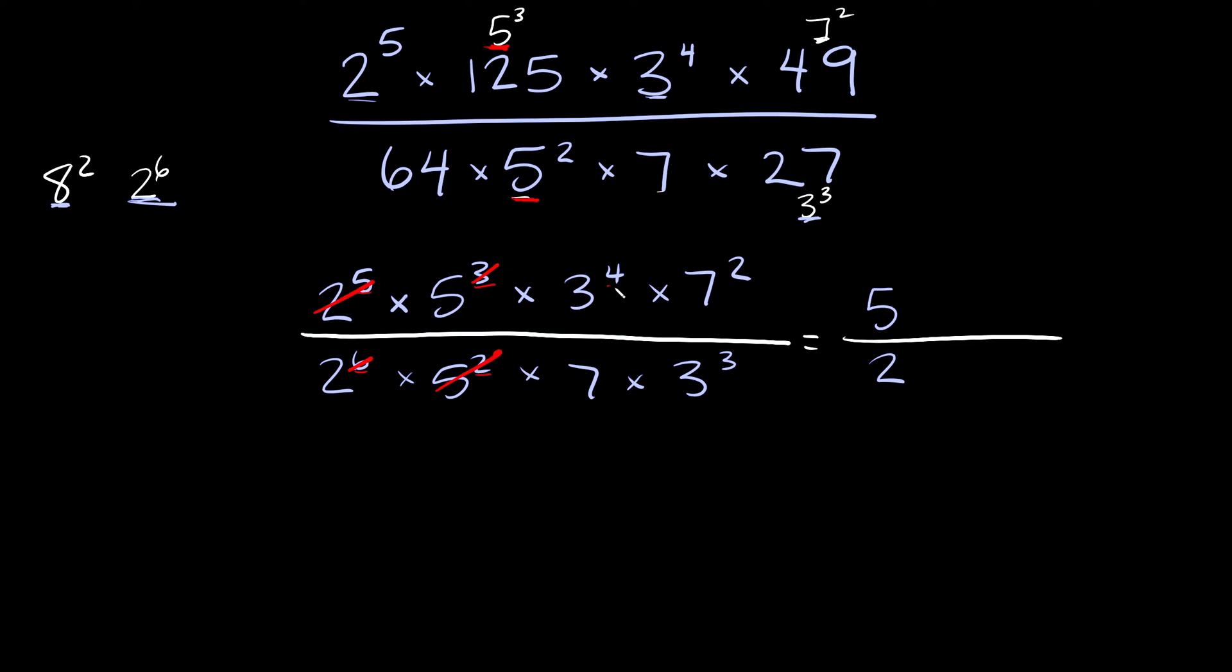Coming over here to the 3's, we have 4 3's on top, 3 3's on the bottom. 3 3's are gonna kill 3 of those so we're only gonna have 1 left over, basically 3 to the first power, so we're just gonna have a single 3 on top.